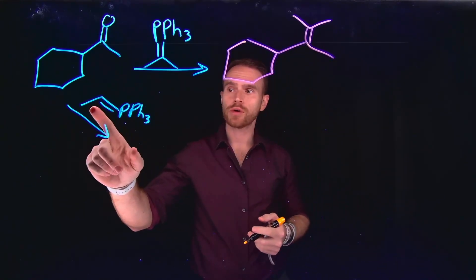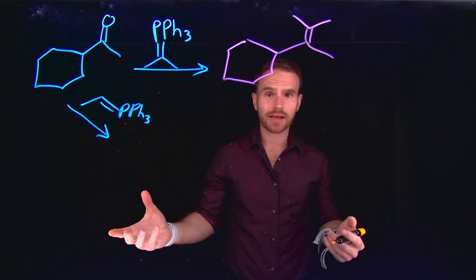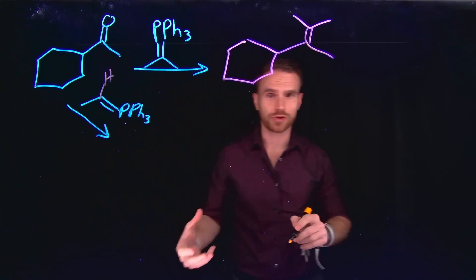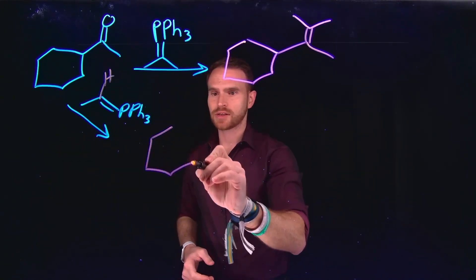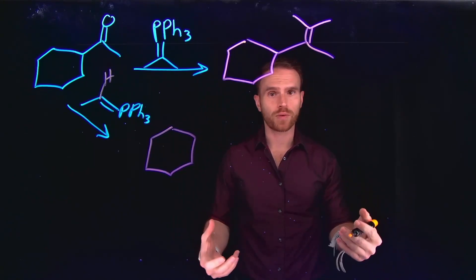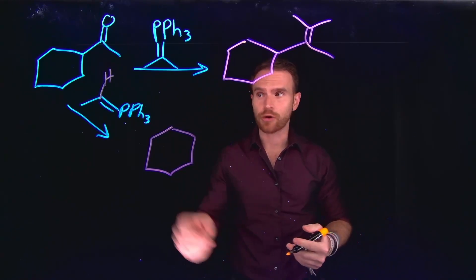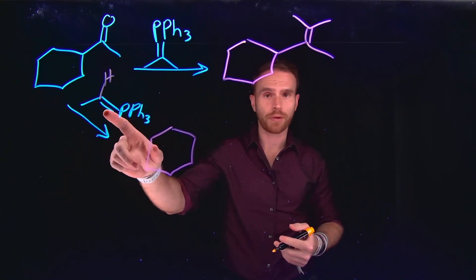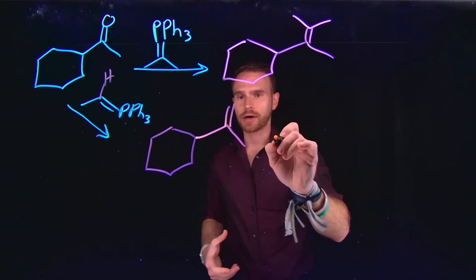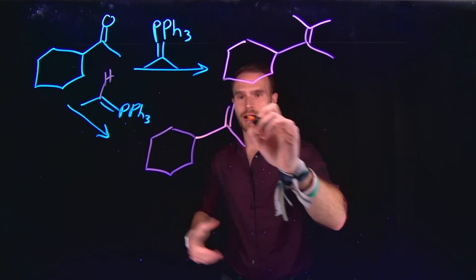However, you'll notice that the second reaction does not contain a symmetrical alkene. In fact, on this other side is just a hydrogen. So therefore, I do need to consider the relative stereochemistry of the alkene that's formed. And remember, we discussed that the Z isomer, as long as there's no electron withdrawing group on the Wittig reagent, is going to dominate. So for that reason, I know that my final product is actually going to be that Z isomer.